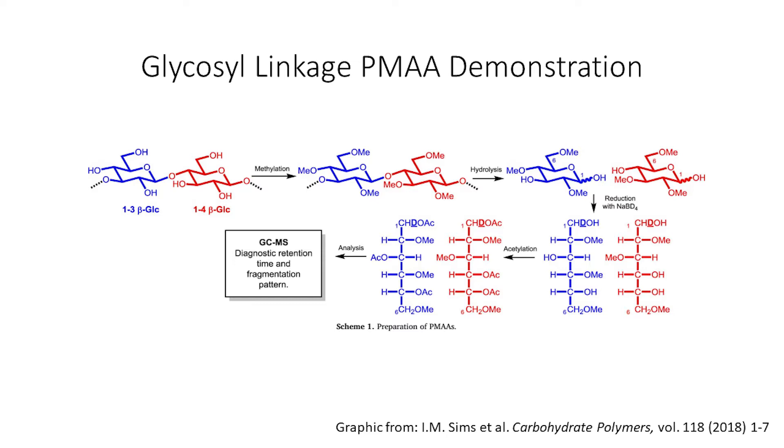Through this method, we are able to detect pyranose and furanose forms of sugars which are indistinguishable through other methods of glycosyl composition. We are unable to observe uronic acids and amino sugars without certain changes to the method, which will be discussed later.